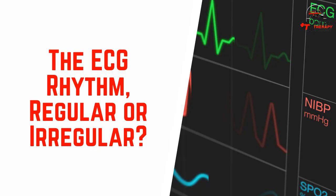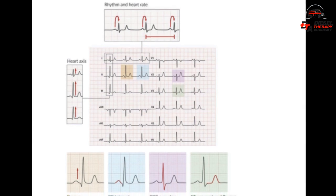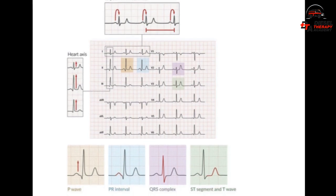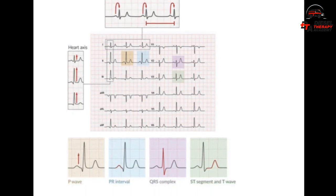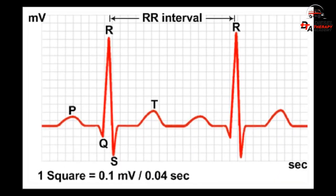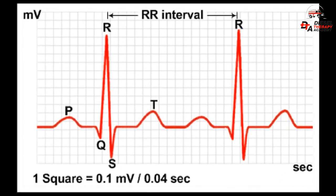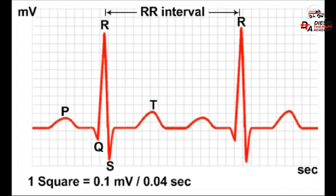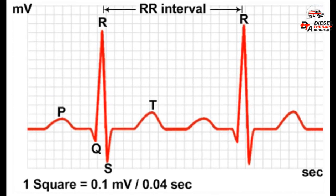The ECG rhythm can be regular or irregular. The QRS identifies the R-wave, the positive wave above the isoelectric baseline. Using a six-second strip, measure the R-to-R intervals between QRS segments and determine if the rhythm is regular or irregular.